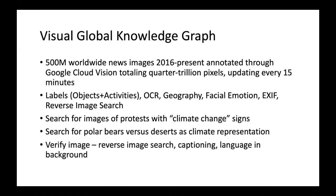Since 2016, we've processed around 500 million news images from around the world. Essentially, we take a news article, find the images that appear to be high enough resolution and processable, and then run those through Cloud Vision with all its features enabled: labels (objects and activities), OCR, geography (estimating the geographic location of the image), facial emotion, all the EXIF metadata present in that image, and then also reverse image search.